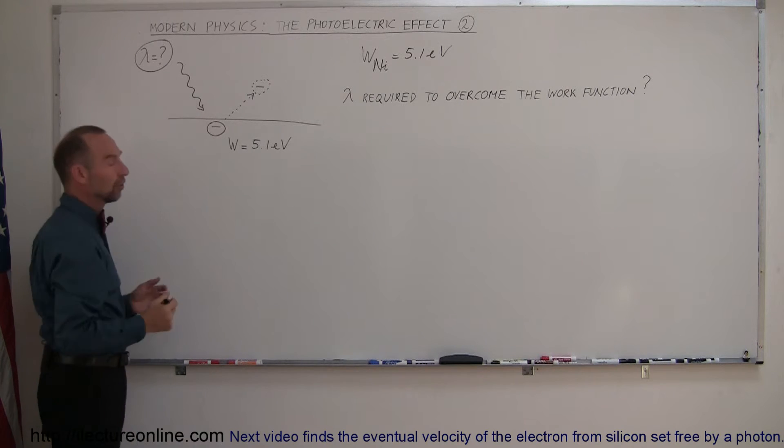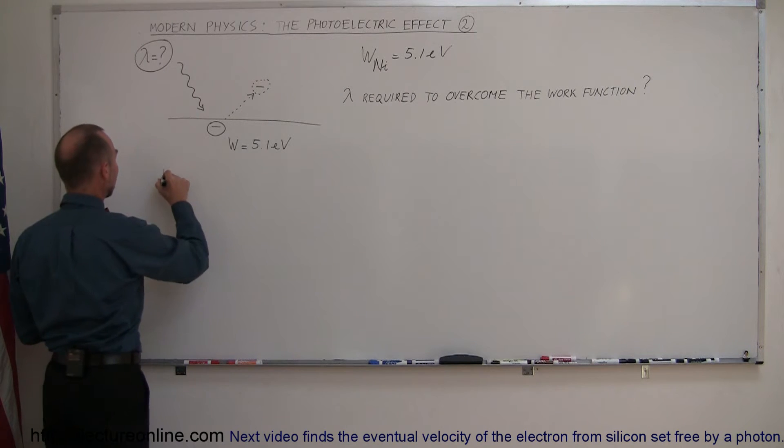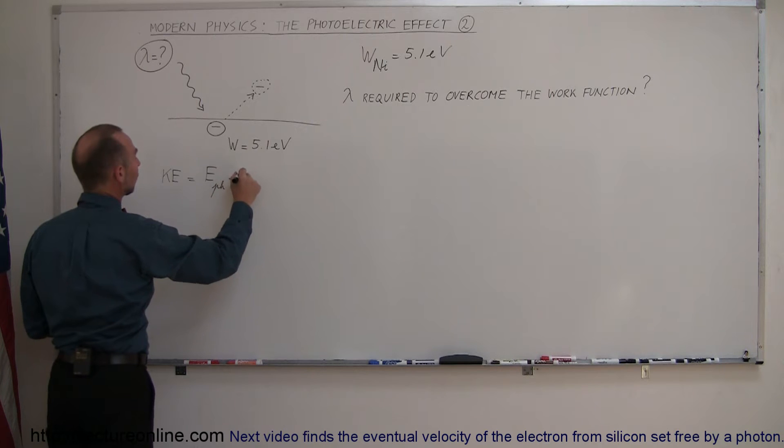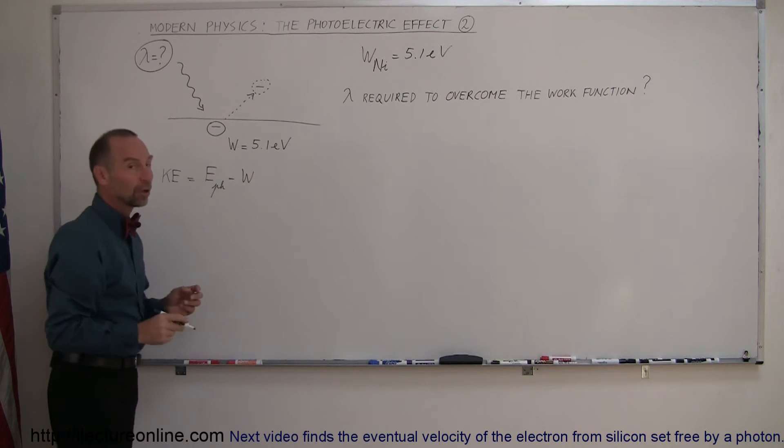All right, so we're looking for the wavelength. So again, we use the equation that the kinetic energy imparted on the electron is equal to the incoming energy of the photon, energy of the photon minus the energy required to overcome the work function.